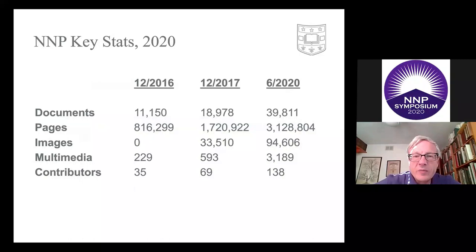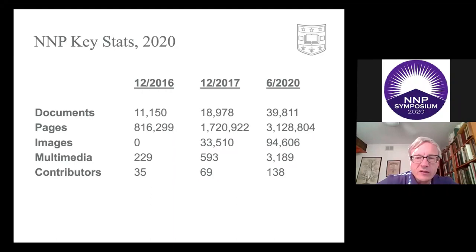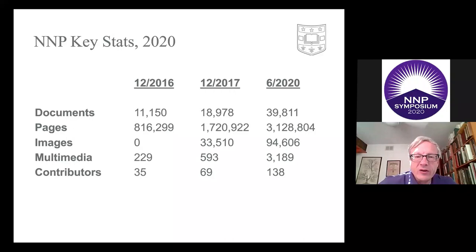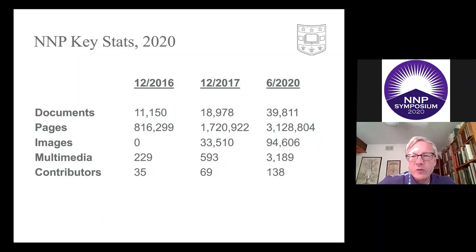Looking at collection stats over the last few years, there's been steady growth across all categories. The one I really like to see is contributors — we have a lot of individuals and organizations that have contributed content toward Newman Portal, and that's where the real growth will be in the future. We've done a lot of work getting all the core items onto Newman Portal: a complete run of The Numismatist, catalogs from the major auction houses. Over the long term, the real growth is going to be what individual contributors put in.